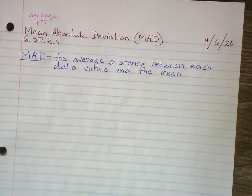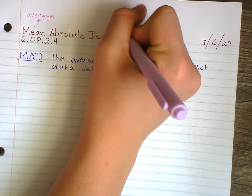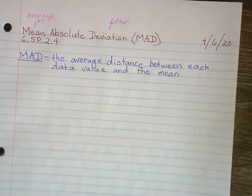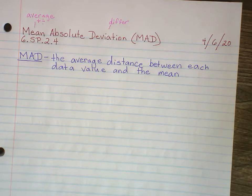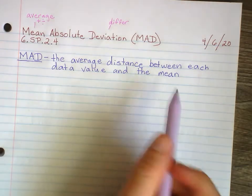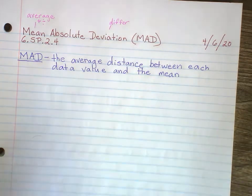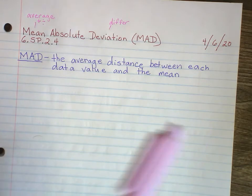Deviation — what does that word mean? To deviate means how much does it differ, how far apart is it. For example, if you guys in class were all 12 and a new student comes in who is 15, obviously he differs — he deviates from the mean, from the normal. He deviates three years because he's three years different from you guys. It doesn't matter if he's three years older or three years younger — he's three years different.